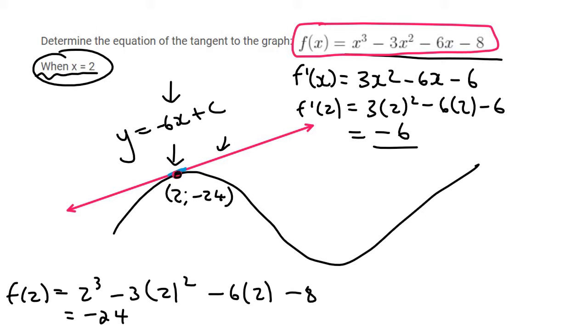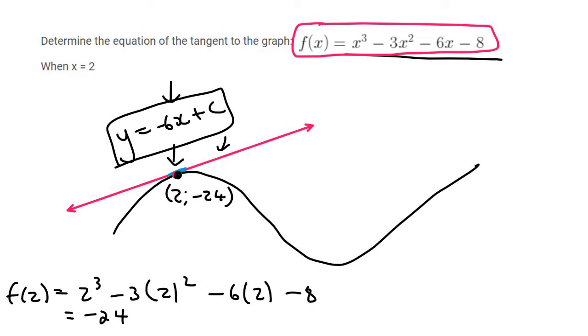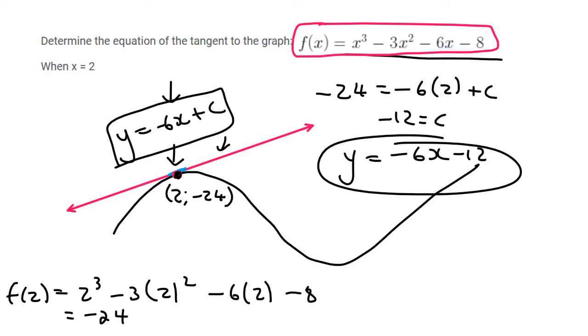Now that point is also on the tangent, so we can use it to help us find c. And so we can say minus 24 equals minus 6 times 2 plus c. If you do this, c would be minus 12. And so the equation of that tangent is y equals minus 6x minus 12.